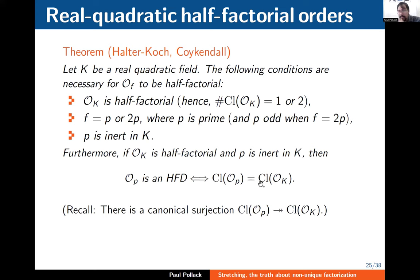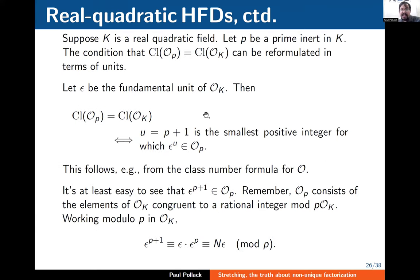Being more of an analytic number theorist, this algebraic condition doesn't speak to me directly. But you can reformulate it: if K is a real quadratic field with fundamental unit ε and p is inert in K, then the equality of class groups is exactly the same as asking that the smallest power of ε belonging to the order O_p is the (p+1)-th power. So ε^(p+1) should be the smallest power of ε belonging to O_p. This equivalence follows from the class number formula for orders.